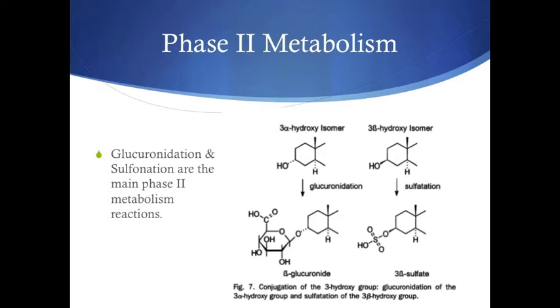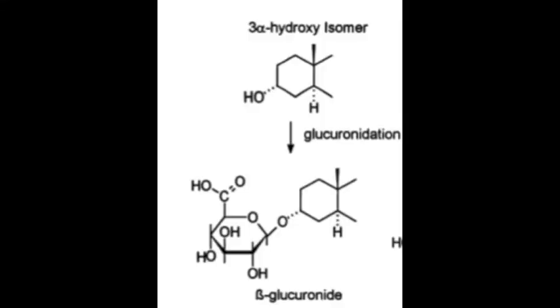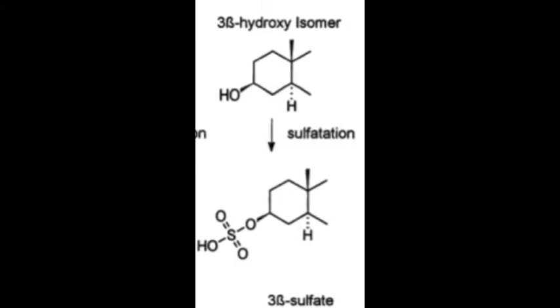The Phase II metabolism reactions that Dianabol undergoes are sulfonation and glucuronidation. Glucuronidation is enzymatically catalyzed by UGTs and also requires the cofactor UDPGA. Sulfonation is catalyzed by sulfotransferases, which require 3-phosphoadenosine-5-phosphate, also known as PAPS, as a cofactor in the sulfonate transfer. The metabolite epi-methyl-dione is readily formed by the attack of water on the sulfate conjugate of Dianabol. Phase II metabolism reactions increase hydrophilicity to facilitate excretion of Dianabol from the body.